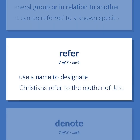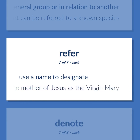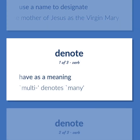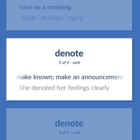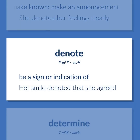Refer / Denote: Use a name to designate — 'Christians refer to the mother of Jesus as the Virgin Mary.' Have as a meaning — 'Multi denotes many.' Make known; make an announcement — 'She denoted her feelings clearly.' Be a sign or indication of — 'Her smile denoted that she agreed.'